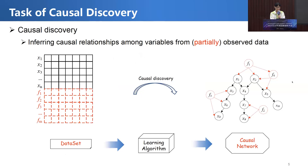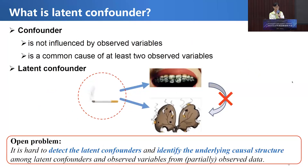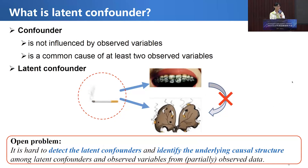What is partially observed data? That means that some data implies latent variables. The latent variable we are interested in is the latent confounder. The confounder is not influenced by observed variables and it is a common cause of at least two observed variables. The latent confounder means the confounder is unmeasured or unobserved. In the previous example, smoking is the latent confounder for yellow teeth and lung cancer.